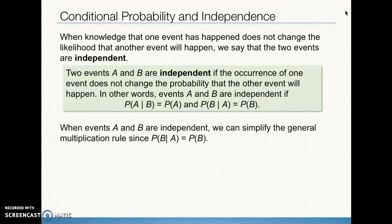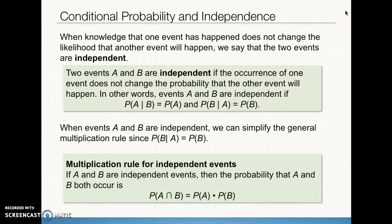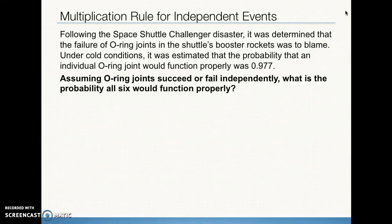When events A and B are independent, we say that these probabilities are equal. And if they're not equal mathematically, then we know that we do not have independent events. When we have independent events, we don't have to use the general multiplication rule, and we can just multiply the two probabilities. So the multiplication rule for independent events.